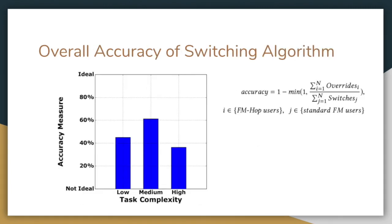To measure the accuracy of FMHOP's switching algorithm, we look at instances where a switch made by FMHOP was overridden by the user. We define an accuracy measure using a given equation, obtaining a continuous measure between 0 and 1, with a higher value indicating greater accuracy. The accuracy measure is similar across the three complexity categories. Since accuracy is measured on a spectrum from 0% — equivalent to not having FMHOP — to 100% where the user liked every switch, a realized accuracy measure representing about half the total possible improvement is significant.